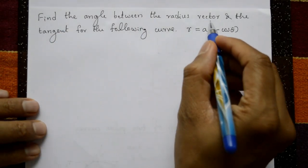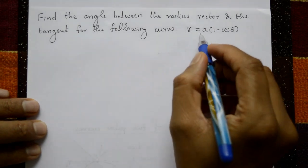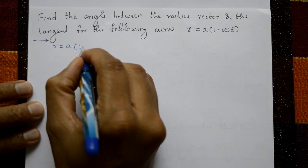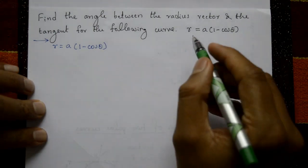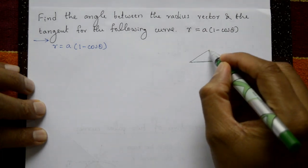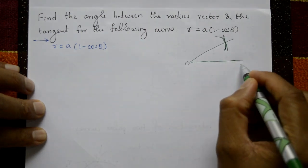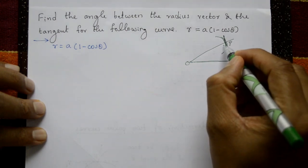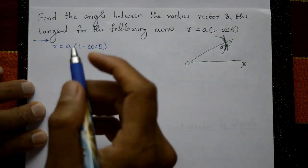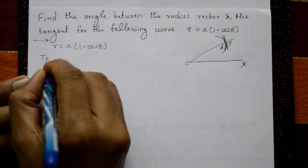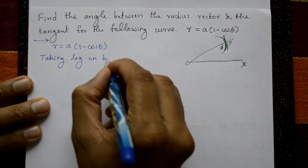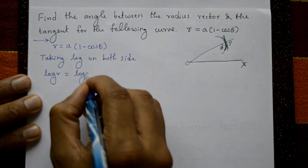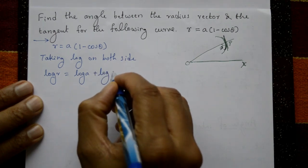Find the angle between the radius vector and the tangent for the following curve. The curve is given as r = a(1 - cos θ). In the diagram, OP is the radius vector and this is a curve; we need to find the angle ψ. First, we take log on both sides: log r = log a + log(1 - cos θ).